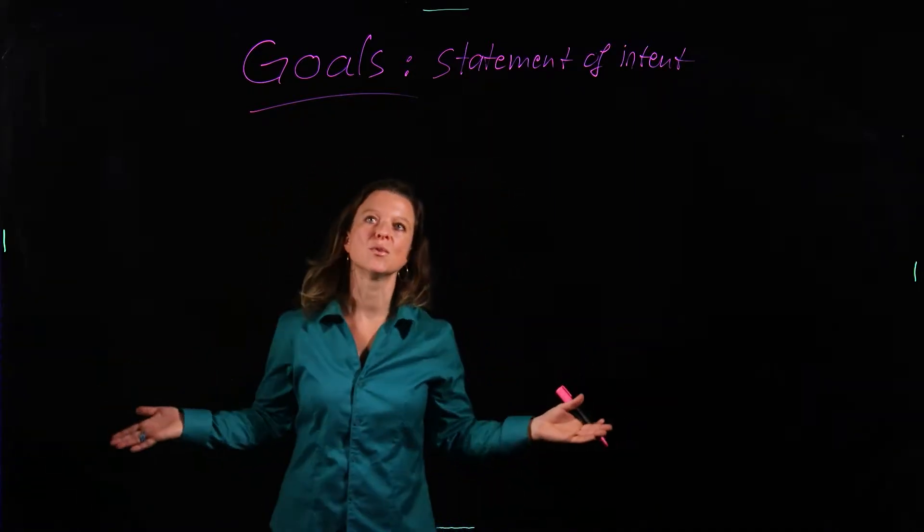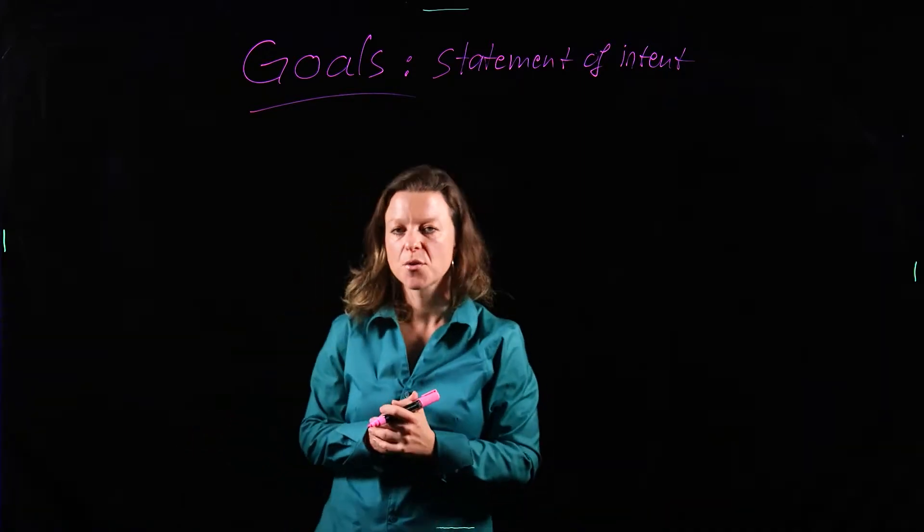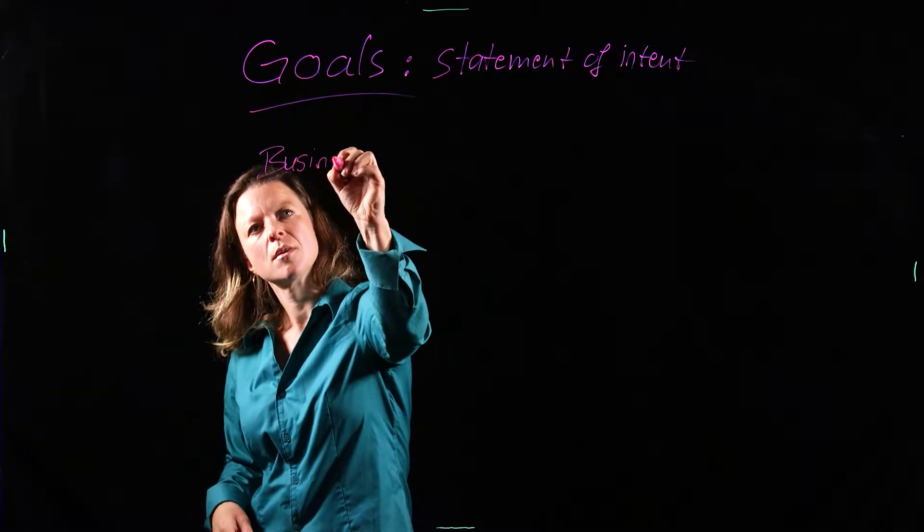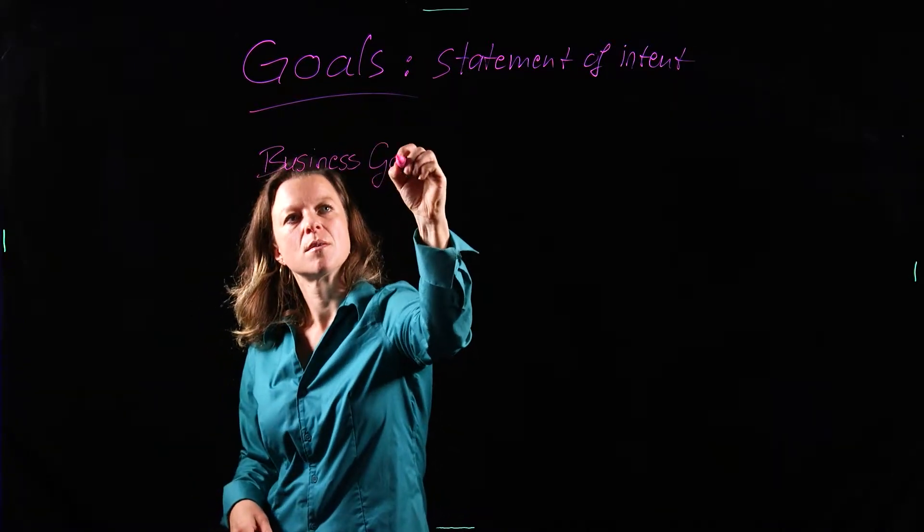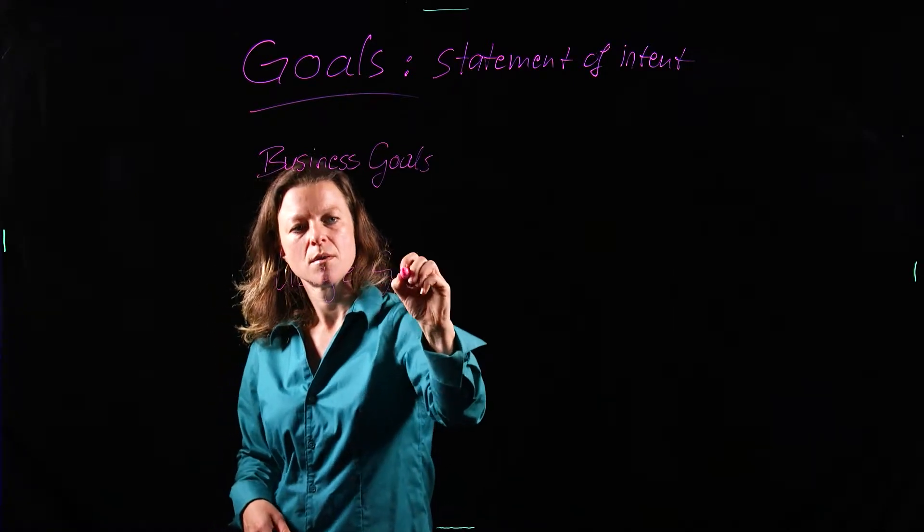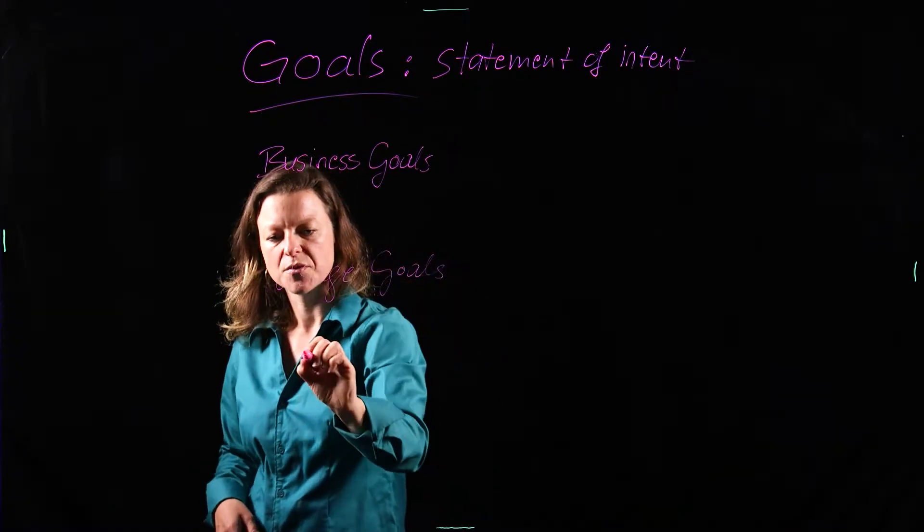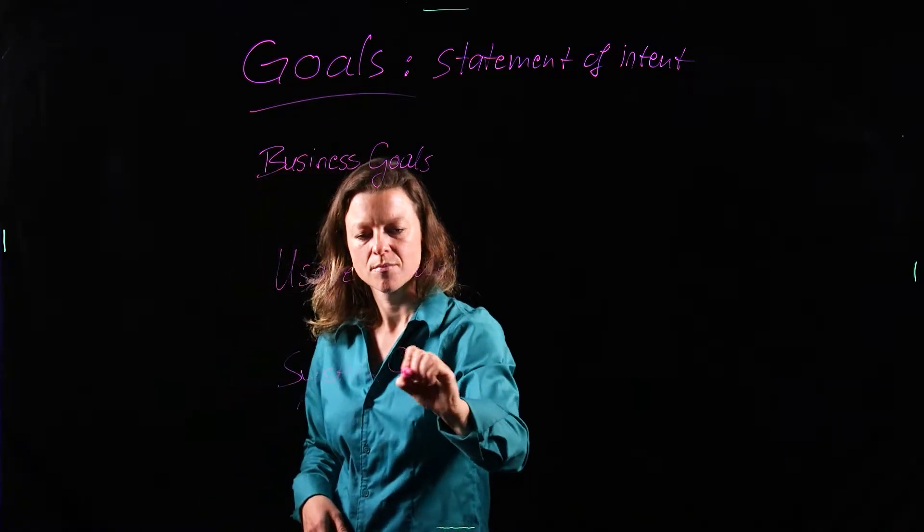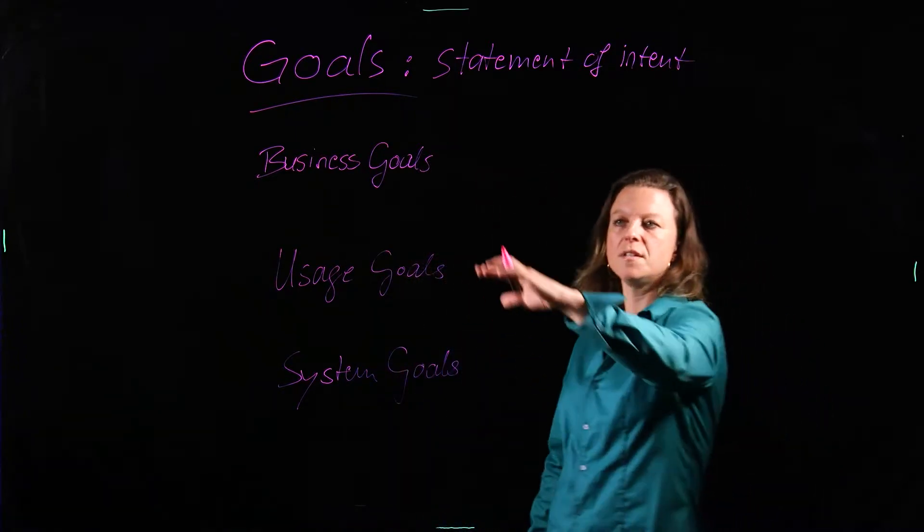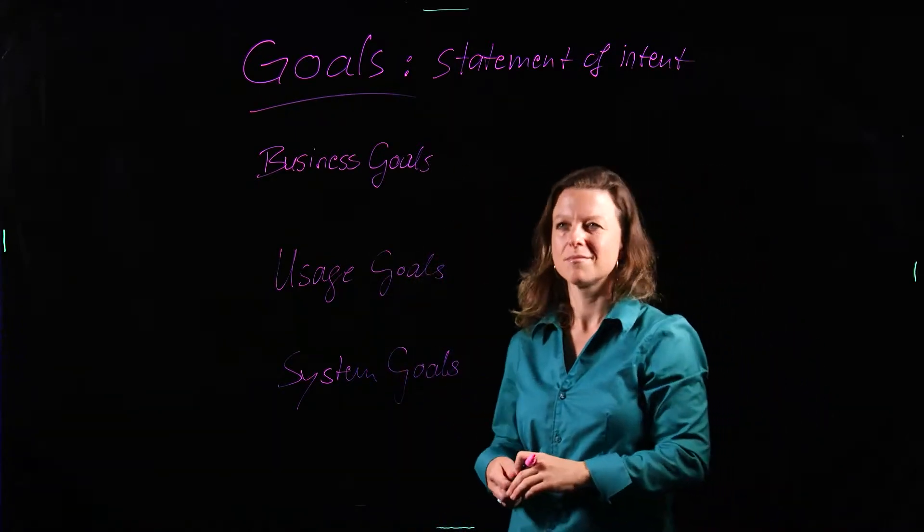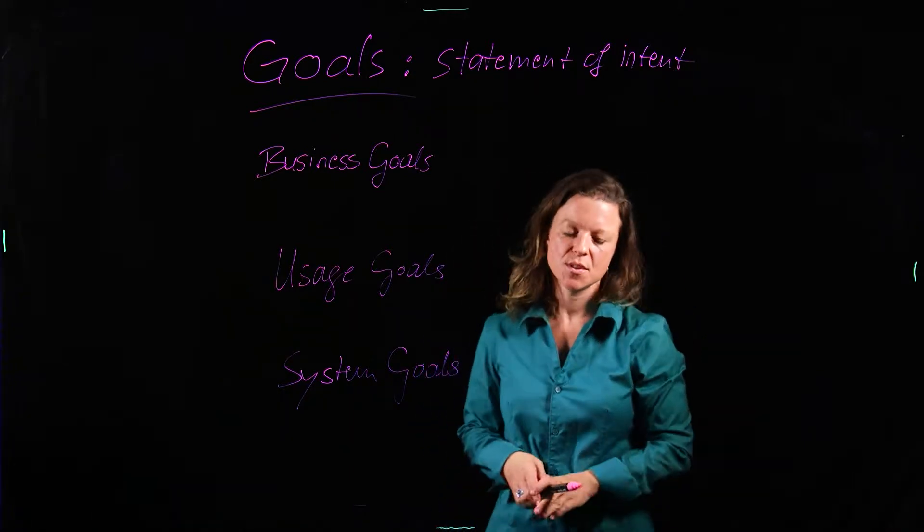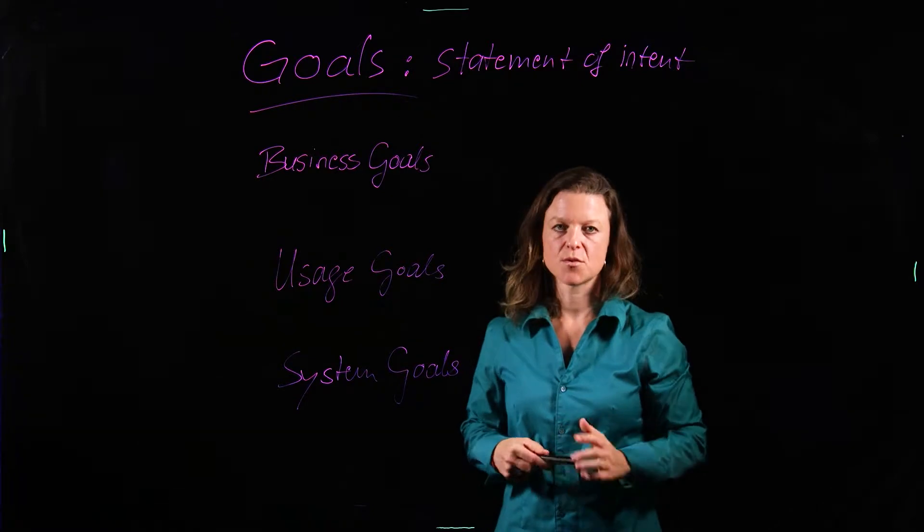Now, goals. So we have three major types of goals. We have business goals, we have usage goals, and we have system goals. You already see, there are three levels. Yeah, we're back to three levels. Now the question is what do each of these types of goals focus on?